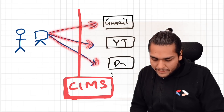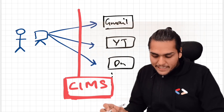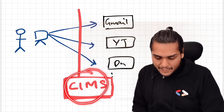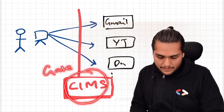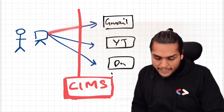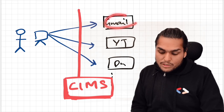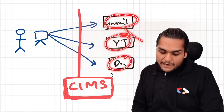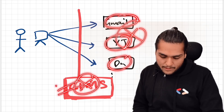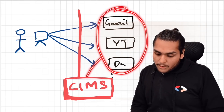Whenever you try to access Gmail, YouTube, Google Drive, or any other application in Google's ecosystem, you need to pass through this gatekeeper. If you cannot pass this boundary, you cannot access Gmail, YouTube, or Google Drive. So it was not Gmail, YouTube, or Google Drive which was down — the problem was in CIMS. This system went down, and all these Google services are dependent on it.